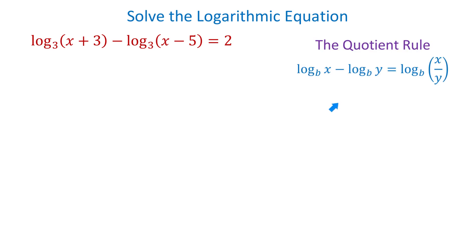The quotient rule tells us that we can write a difference of two logarithms as a logarithm of a quotient. That is, log base b of x minus log base b of y equals log base b of x over y.